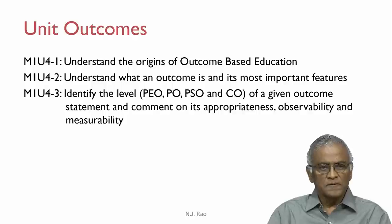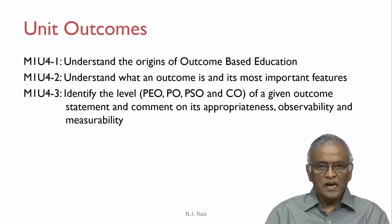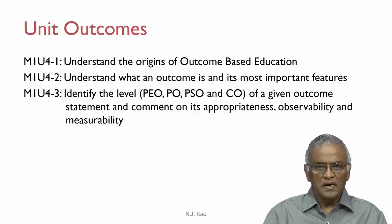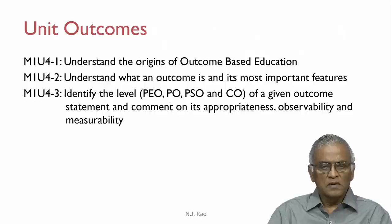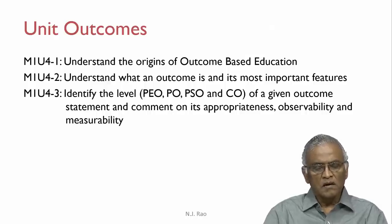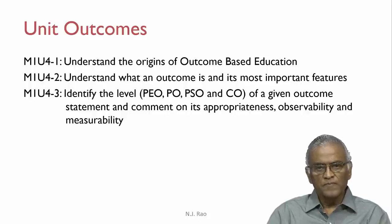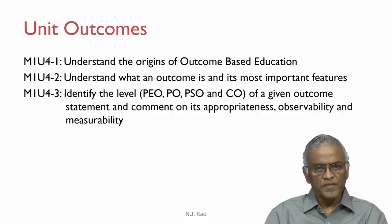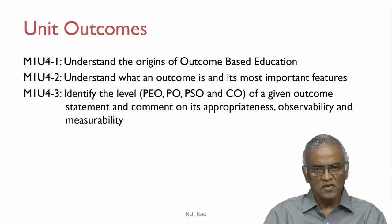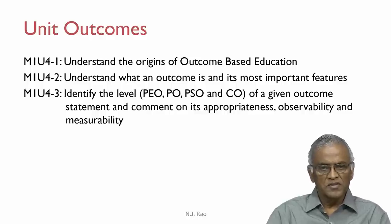The outcomes of this unit include: understand the origins of outcome based education; understand what an outcome is and its most important features. We will be spending several sessions on writing and defining outcomes of a program or course under various contexts. The learner should be able to identify the level of a given outcome statement and comment on its appropriateness, observability, and measurability. We are going to talk about four levels of outcomes, namely PEOs, POs, PSOs, and COs.